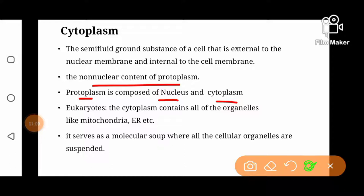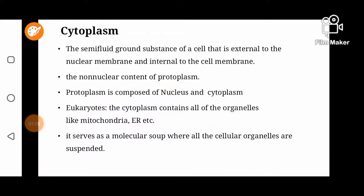Both prokaryotic and eukaryotic cells have cytoplasm. In eukaryotic cells, cytoplasm contains small subcellular structures known as organelles, like mitochondria, endoplasmic reticulum, etc. Cytoplasm acts as a molecular soup where the cellular organelles or subcellular structures are suspended.